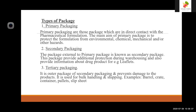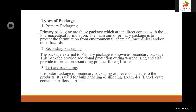Primary packaging includes containers and receptacles that hold, protect, and organize products and materials during storage and transport. It is used by nearly every industry including aerospace, appliances, automotive, beverage, chemicals, construction, and consumer goods. Secondary packaging is the package external to the primary package; it provides additional protection during storing and warehousing and also provides information about the drug product, for example leaflets. Tertiary packaging is the outer package of secondary packaging and prevents damage to products; it is used for bulk handling and shipping — examples include barrels, crates, containers, pallets, and slip sheets.